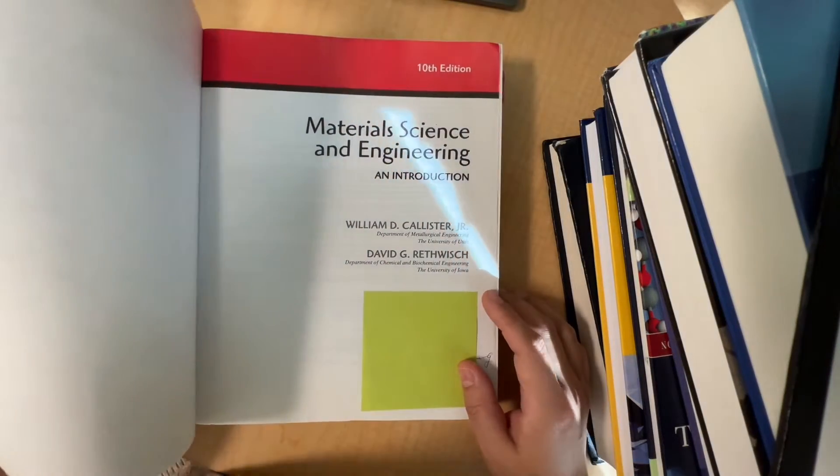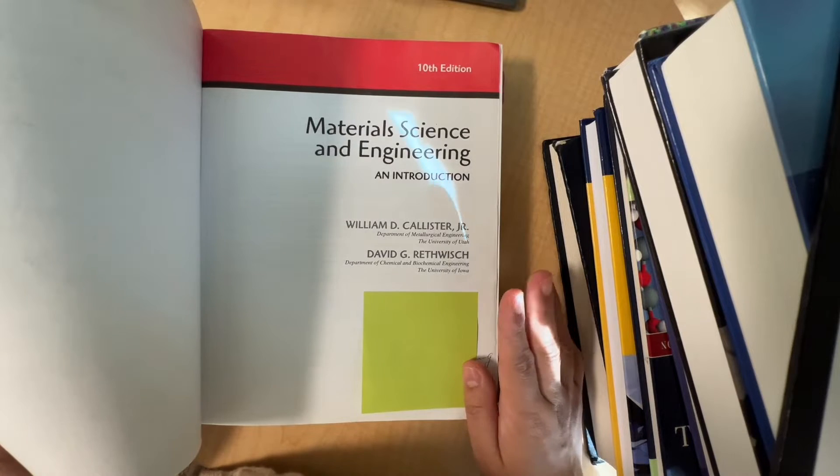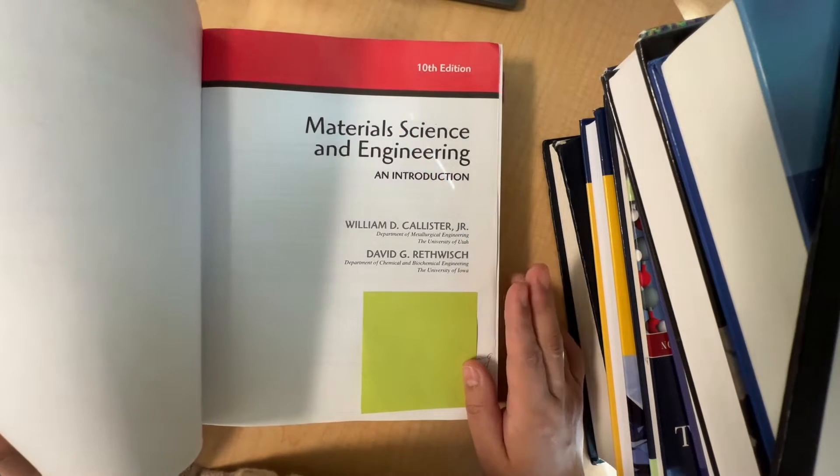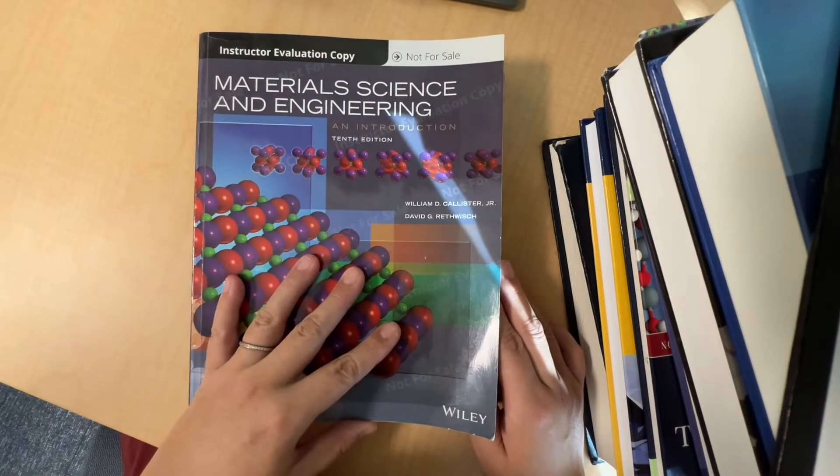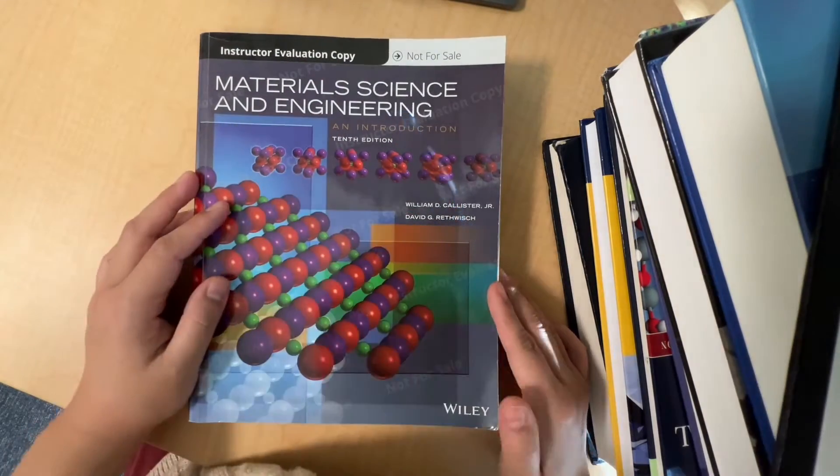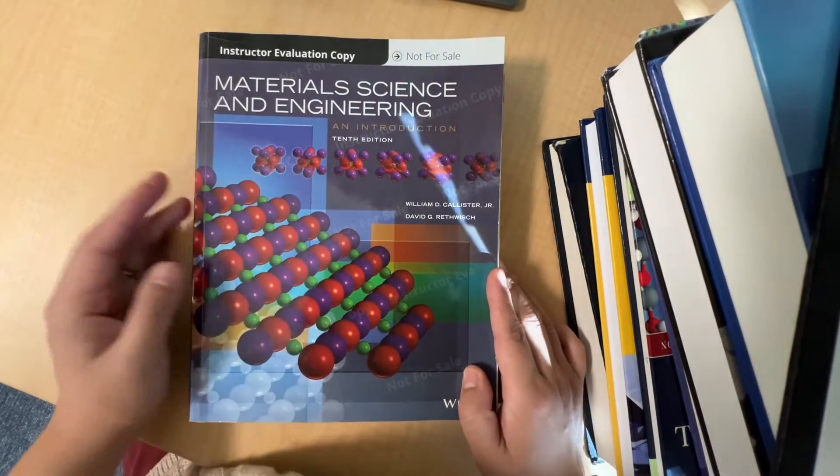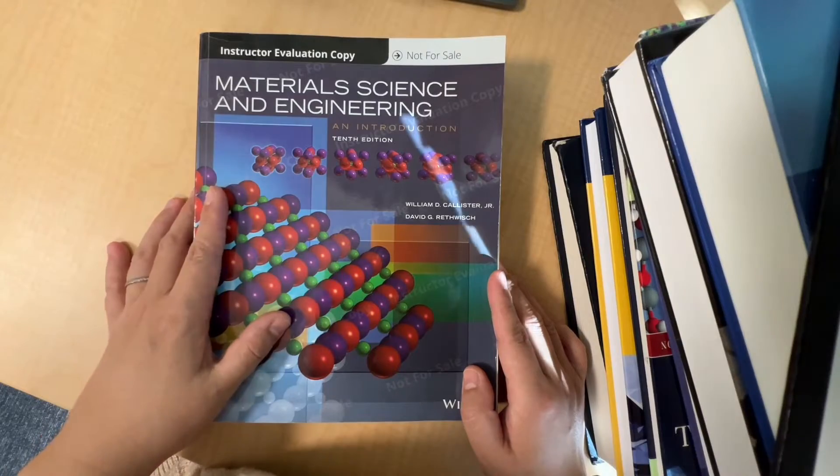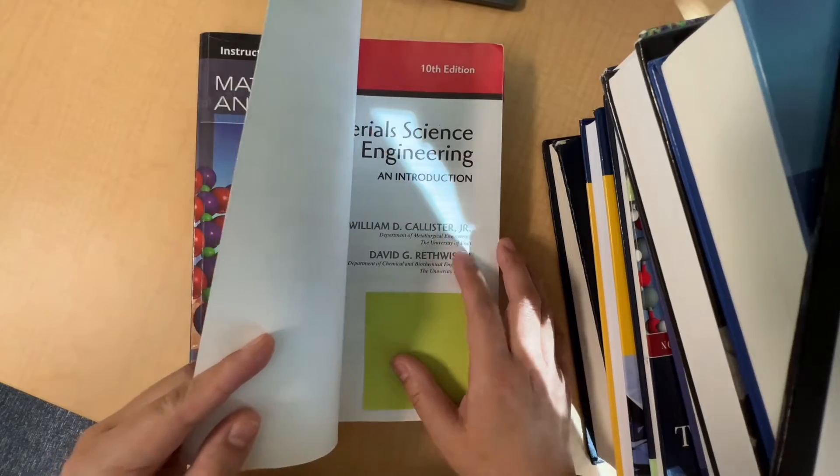If you're studying material science and engineering at any institution, most likely this is the textbook you'll be introduced to during your freshman or sophomore year. I've only seen another textbook different from the Callister book that's used for civil engineering students, but for most material science and engineering students, either from UIUC, MIT, or Virginia Tech, we're using this textbook.